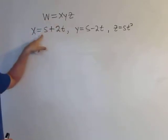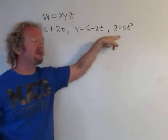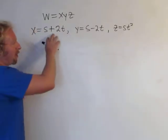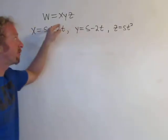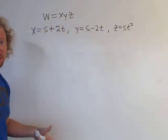But if you look at all three — x, y, and z — you'll notice that they're all functions of s and t. Therefore, w is a function of s and t.